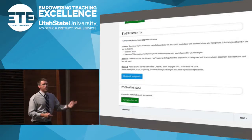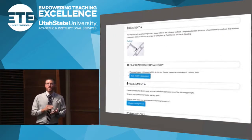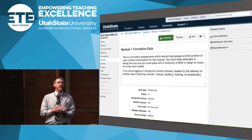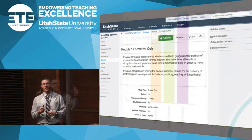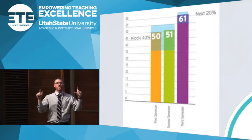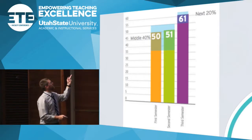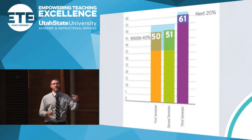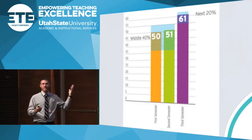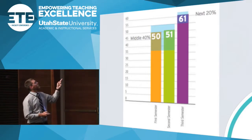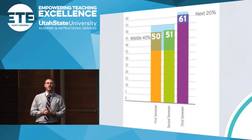I used formative quizzes at the end of every module — 10 questions, and they had to pass with an 80%. If they didn't pass, I encouraged them to go back and relearn the content in a different modality, giving them the option to re-experience the learning. Regarding IDEA evaluations, I was in the middle 50% my first two semesters — around 50 to 51. Those are acceptable. But when I implemented this learning path approach, it jumped by 10 points.